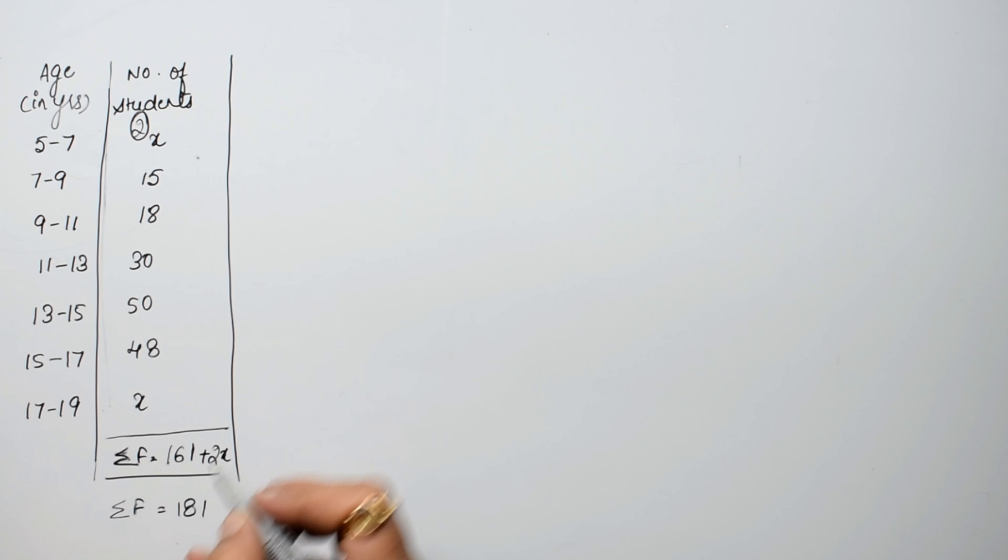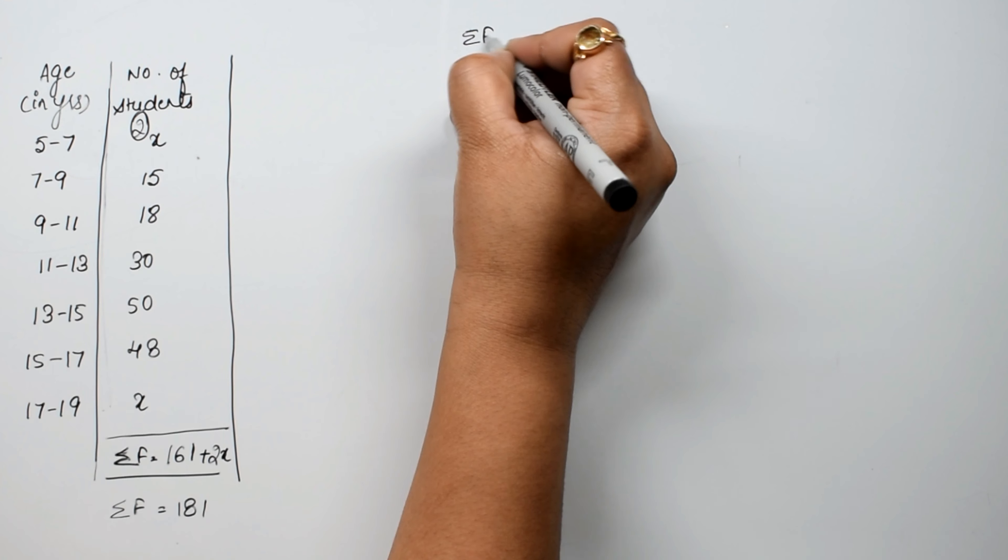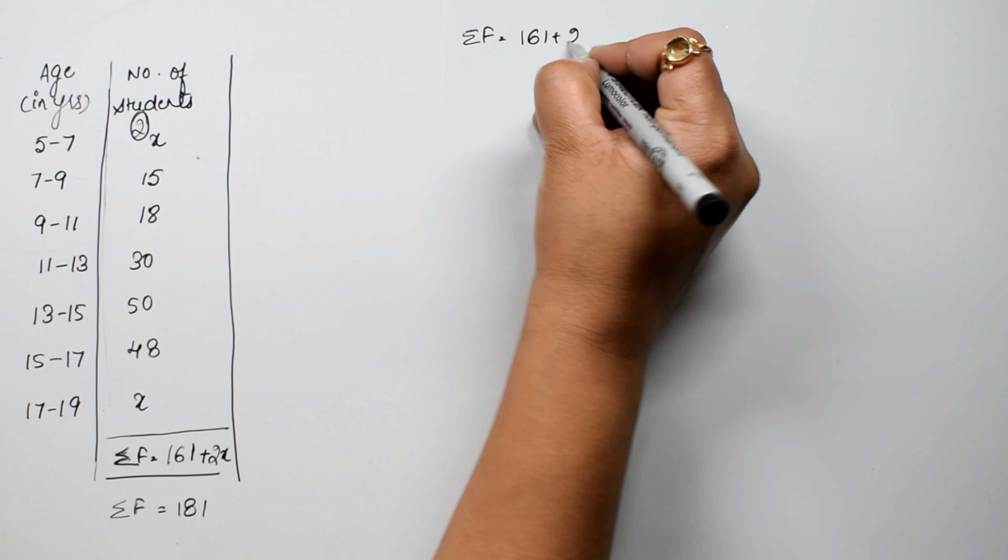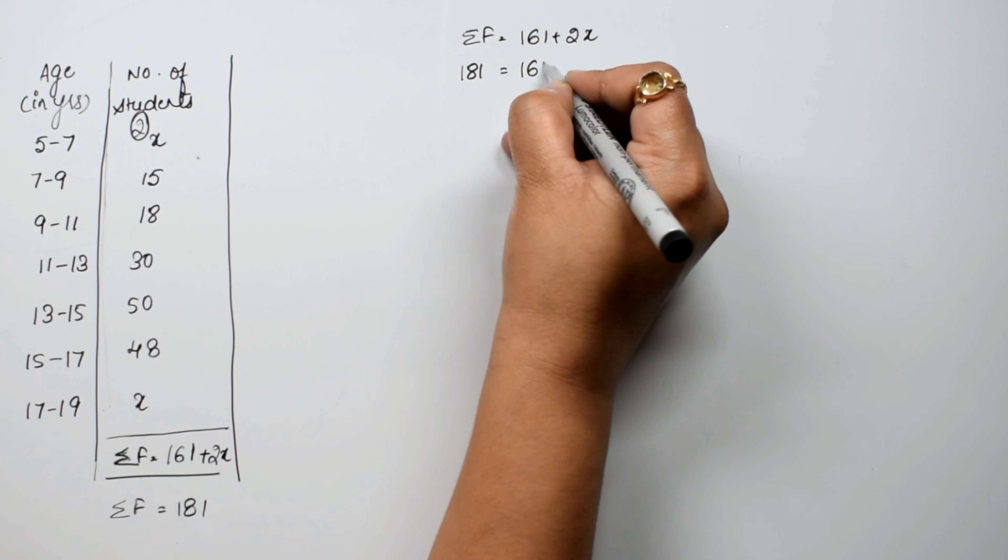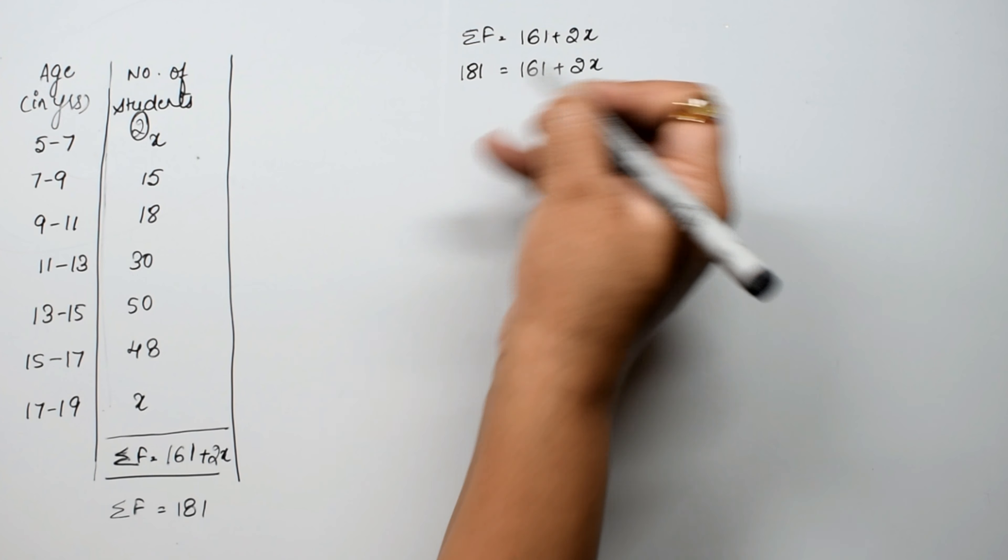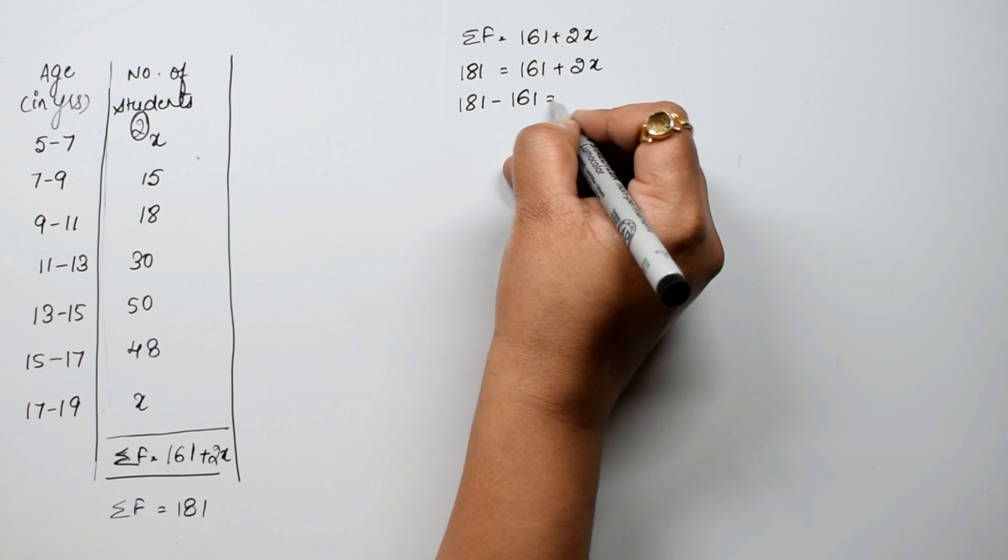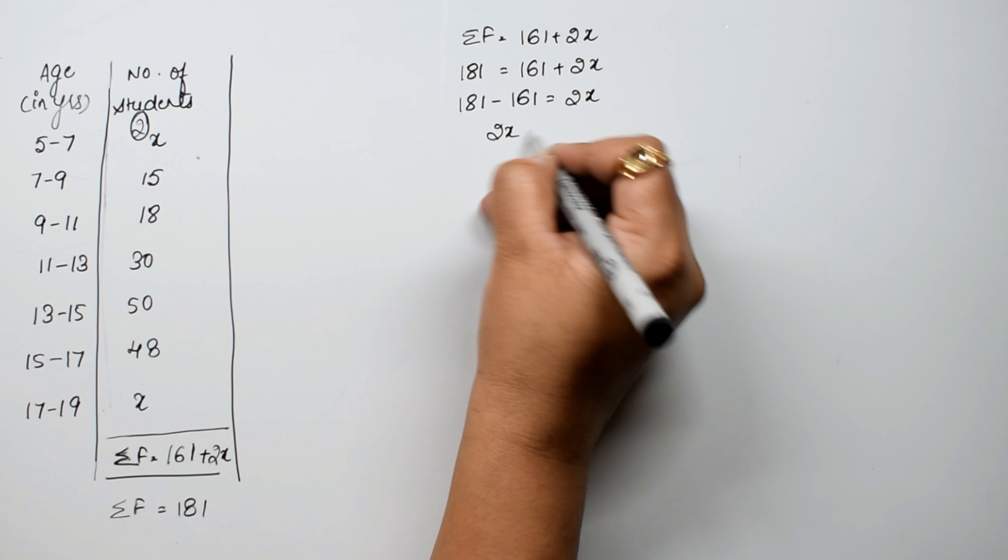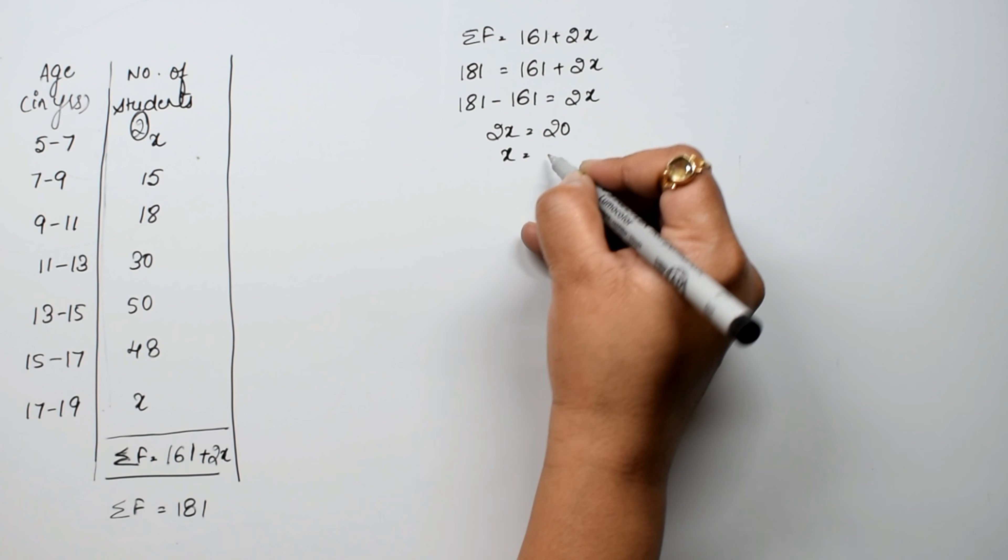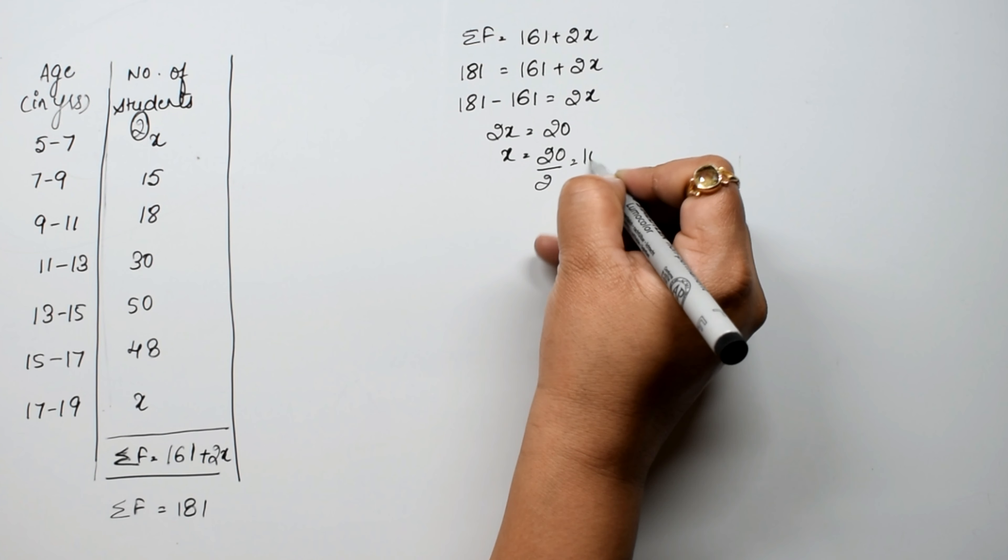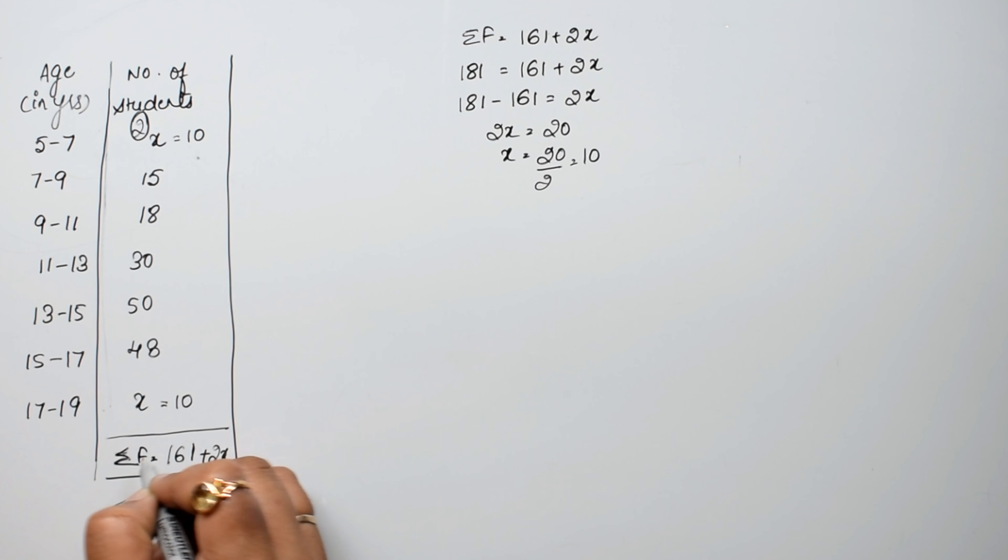Look, missing frequencies, our summation f is 161 plus 2x. Summation total is 181. So we will write 161 plus 2x equals 181. 181 minus 161 equals 2x. So 2x value is 20. 20 upon 2, that is 10. So that means it is 10 and this is 10.